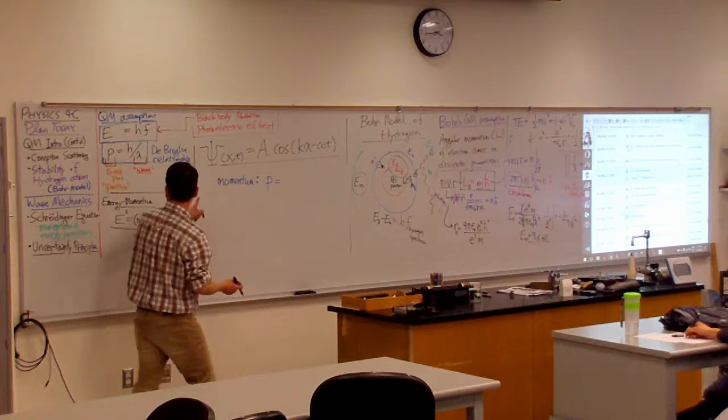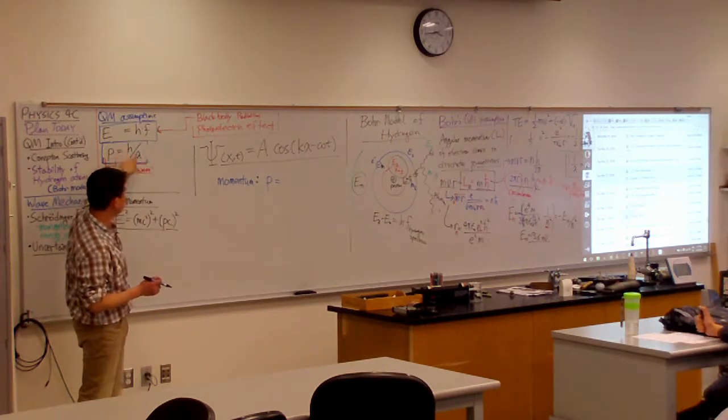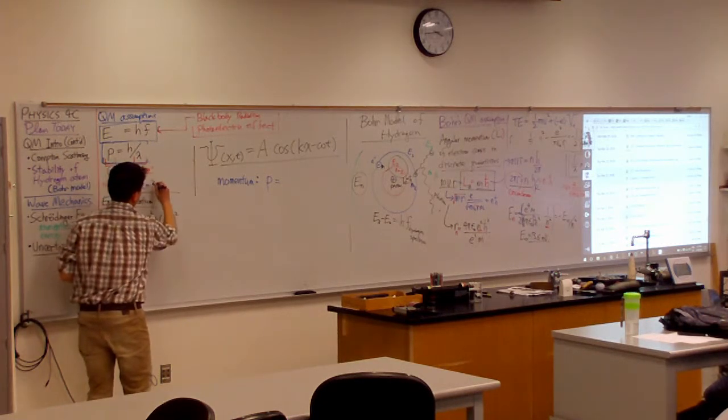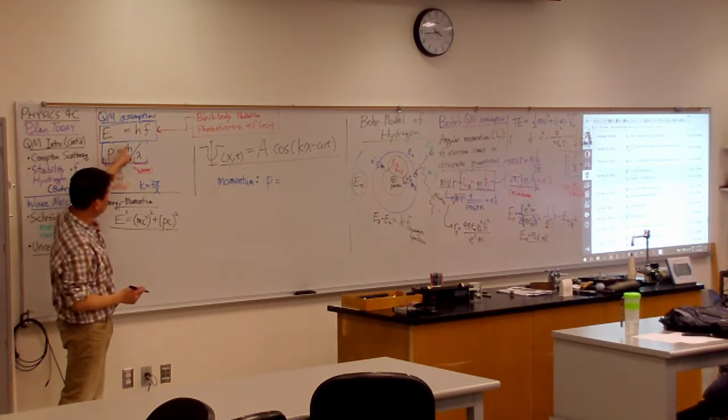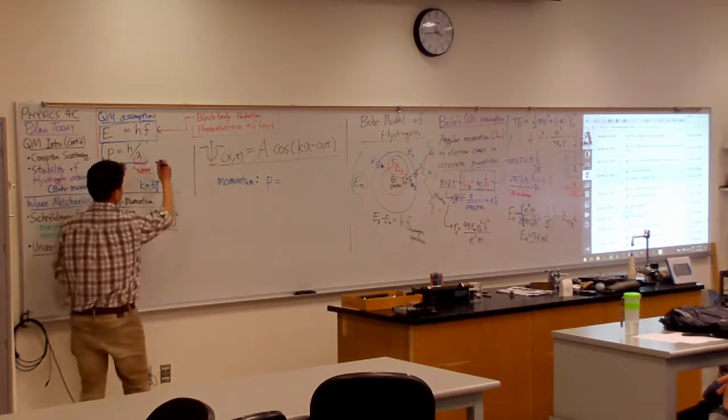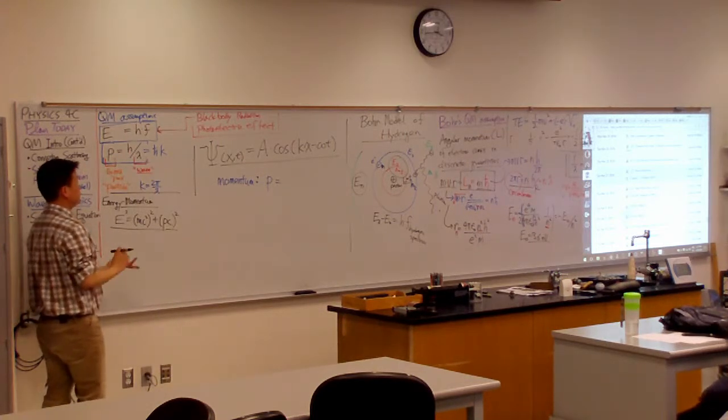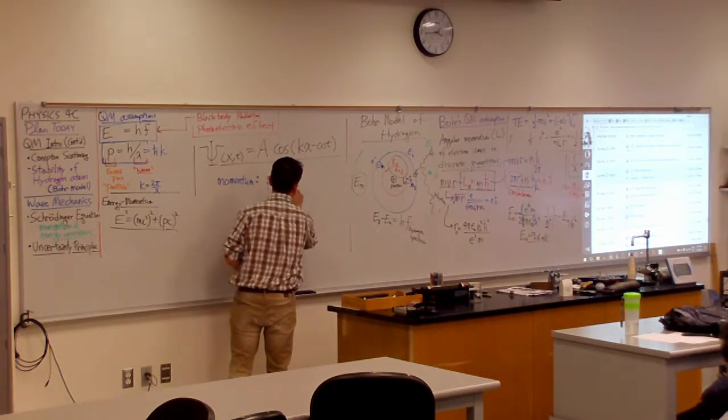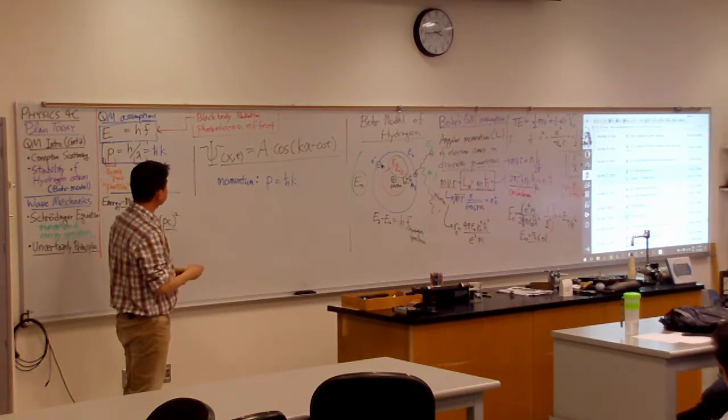Because you remember what I was saying before, the momentum is Planck's constant divided by lambda. Now, you remember that k is 2 pi over lambda. So, you could write this h divided by 2 pi times k. Or, you could write this as h bar k. So, momentum is h bar times k. Okay?